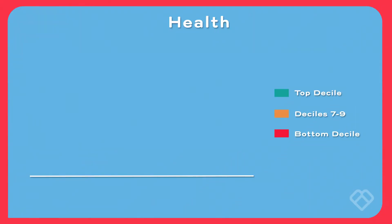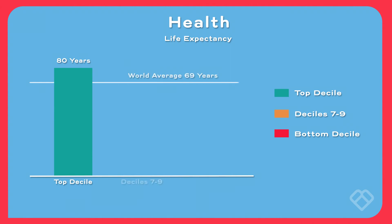The second statistic is on health, and one measure of health is life expectancy. In wealthy countries, people on average live over 80 years. In deciles seven through nine they live an average of 63 years, and in the bottom decile it's just slightly over 50 years.